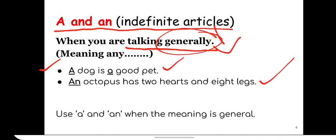An octopus has two hearts and eight legs. And we use an when there is a vowel sound. Octopus - oh, is a vowel sound. Therefore we use an. Otherwise an octopus and a dog means the same thing. A dog means one dog, any dog. An octopus means one octopus, any octopus. So a and an is used for general meaning.